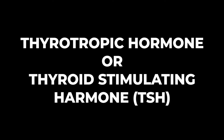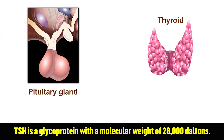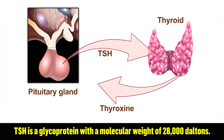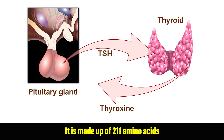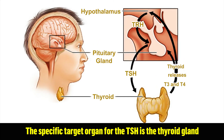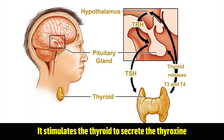Let us know about the Thyrotropic Hormone, or Thyroid Stimulating Hormone, TSH. TSH is a glycoprotein with a molecular weight of 28,000 Daltons. It is made up of 211 amino acids. The specific target organ for TSH is the thyroid gland, and it stimulates the thyroid to secrete thyroxine.